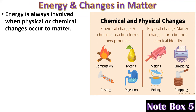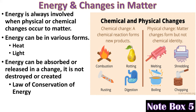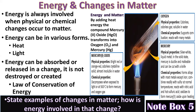Note box five. Notice the picture on the right showing chemical and physical change examples — make sure you study that picture. Energy is always involved when physical or chemical changes occur to matter. Energy can be in various forms such as heat and light. When you do chemical reactions, you can often feel heat or something getting cooler, and you can often see flame or light. Energy can be absorbed or released in a change — it is not destroyed or created; that's called the law of conservation of energy. For example, if you take mercury oxide and heat it, it transforms into pure oxygen and liquid mercury.